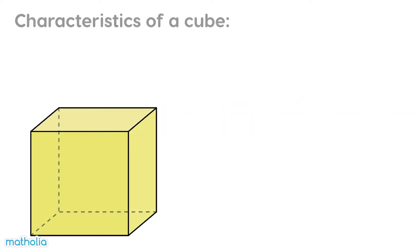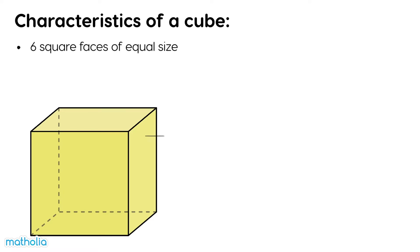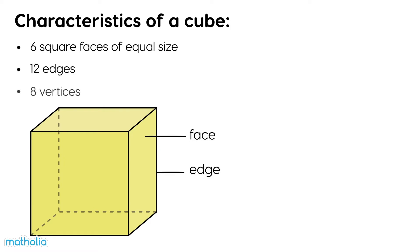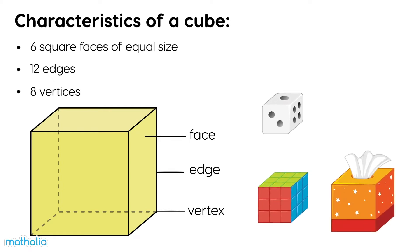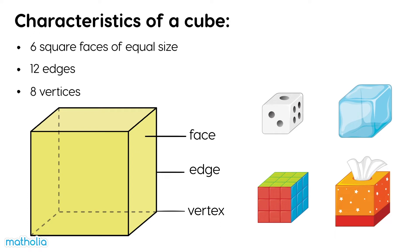What are the characteristics of a cube? Cubes have six square faces of equal size, twelve edges, and eight vertices. Here are some objects shaped like cubes that you might see around your house.